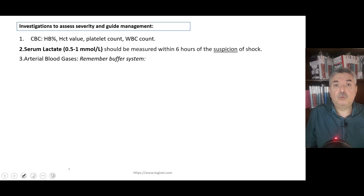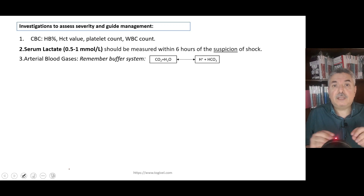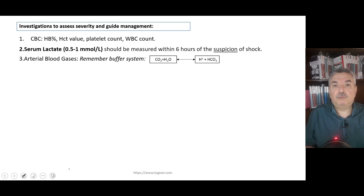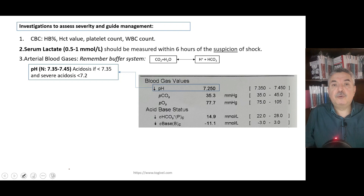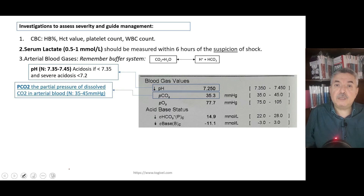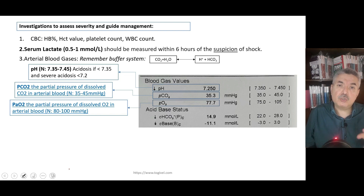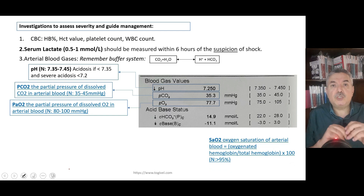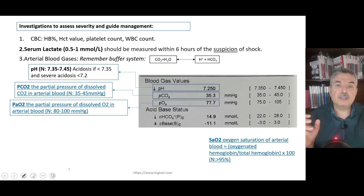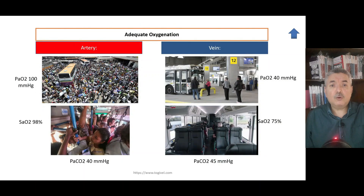The ABG will diagnose acidosis. The hydrogen ions (acid) combine with the buffer bicarbonate, producing water excreted in urine and carbon dioxide expelled in breath. A pH below 7.35 marks acidosis; below 7.25 is severe acidosis. The ABG also shows PCO2 and PO2. Oxygen pressure is the pressure exerted by oxygen gas against the vessel wall, while saturation is the oxygen carried inside the red blood cells — think of pressure as people waiting at a bus stop, and saturation as people seated inside the bus.